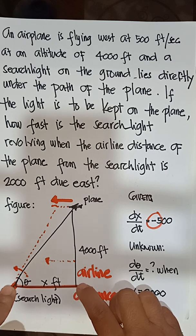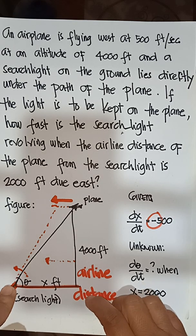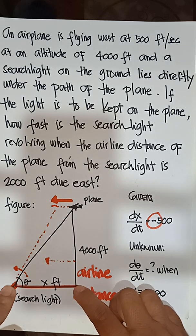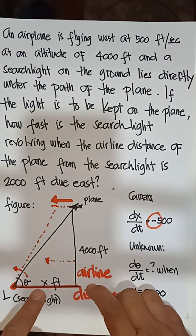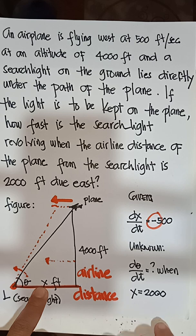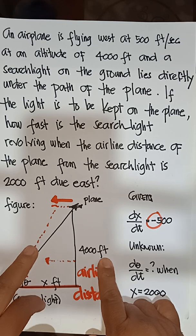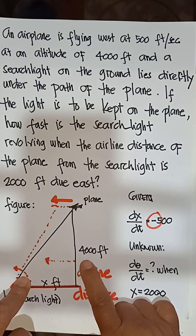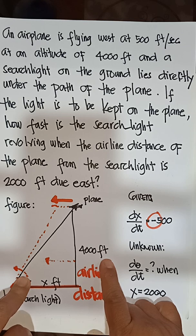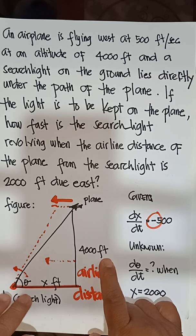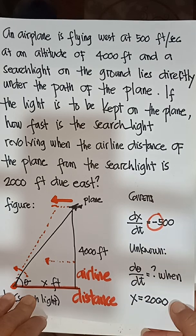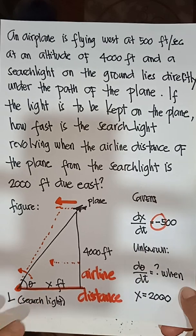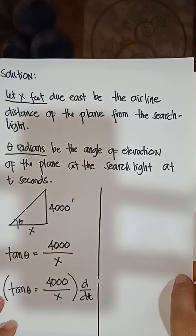For the solution, can we use the Pythagorean theorem? We cannot solve this using the Pythagorean theorem because we have a fixed altitude of 4,000 feet. The Pythagorean theorem only solves for sides. Since we need to find the rate of change of the angle, we will use a trigonometric function.